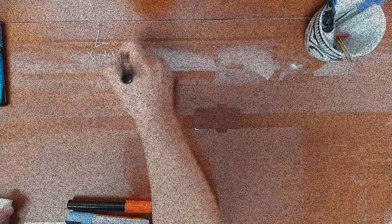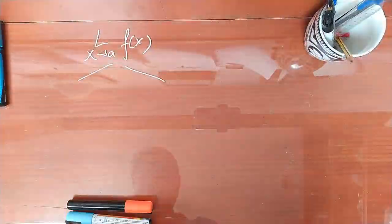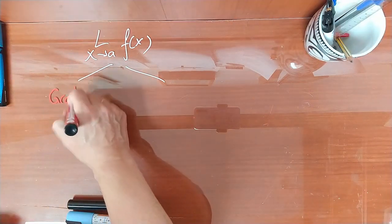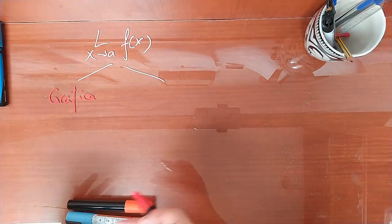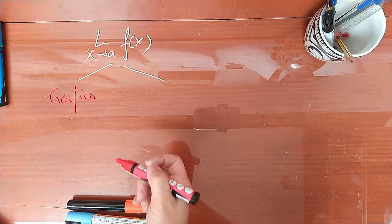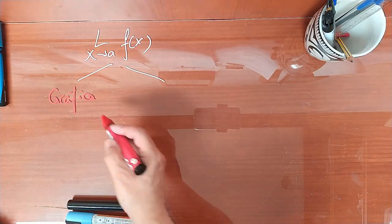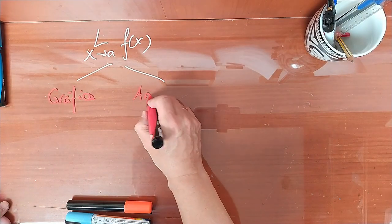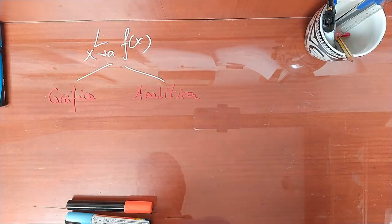¿Qué tenéis que hacer a la hora de tener un límite? Cuando vosotros tenéis que calcular un límite, tenéis dos posibilidades: de forma gráfica, para lo cual es importante que sepáis las funciones elementales. Os he dejado en la descripción un enlace para que lo veáis. O de forma analítica.